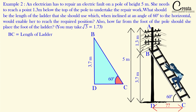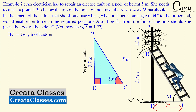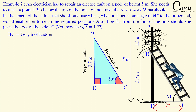Angle C is the trigonometric angle. BD is the perpendicular (opposite to angle C), BC is the hypotenuse (opposite to 90° angle D), and DC is the base. We have to find BC. BD (perpendicular) is given. The relation between perpendicular and hypotenuse is sin theta. Sin theta = perpendicular / hypotenuse. Theta is 60°, BD is 3.7 m, and BC is the missing side. We need sin 60°.